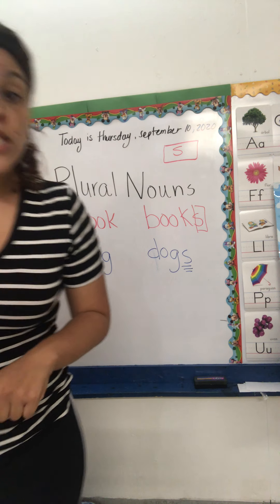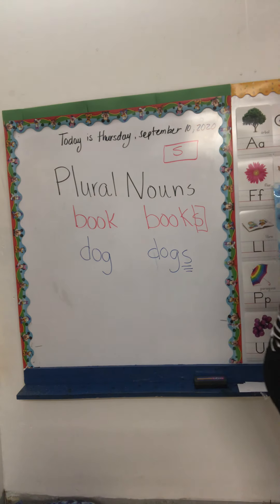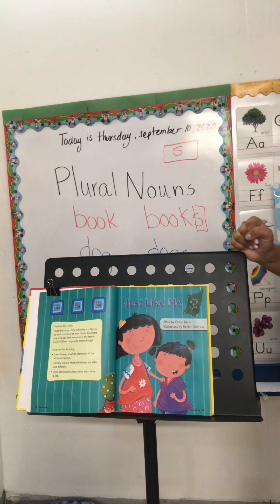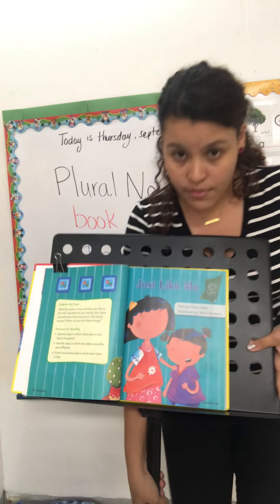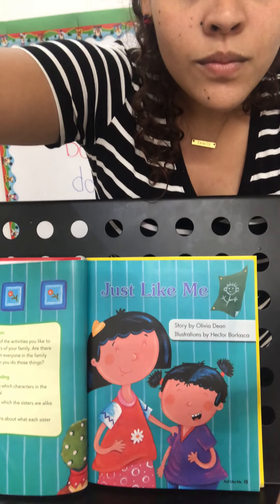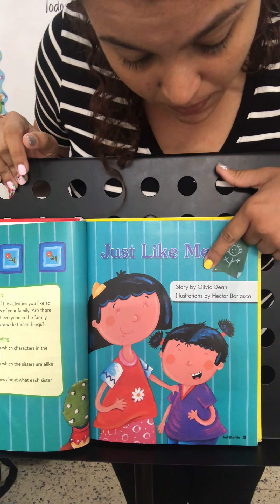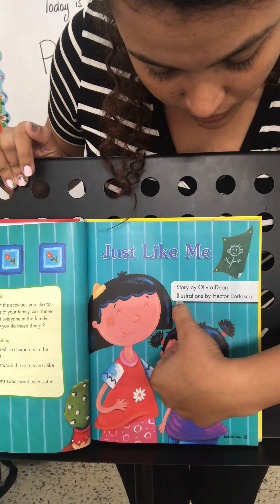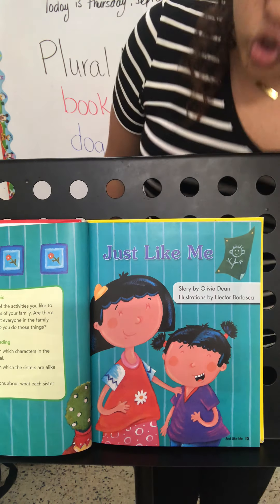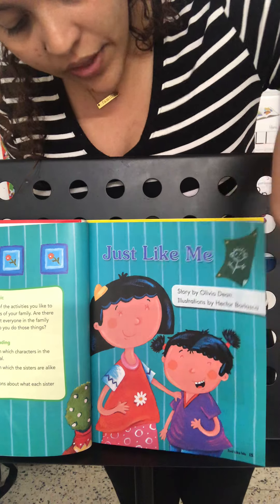So, now we are going to begin reading a few pages of the story — not the whole story. This story is called Just Like Me. Este libro está titulado Just Like Me. Just Like Me. This story is by Olivia Dean, with illustrations by Hector Borlaska. Aquí tenemos el título del cuento y el autor de la historia — the author.